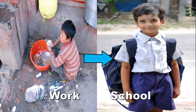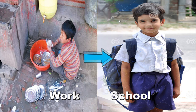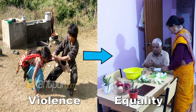Here is a picture of child labor. If he gets a chance to go to school and get an education, that will be development for him. The first slide shows women facing violence. If her condition improves and she gets equality, as shown in the other picture, then that may be development for her.